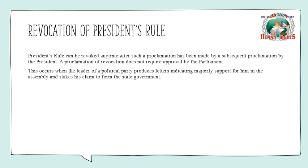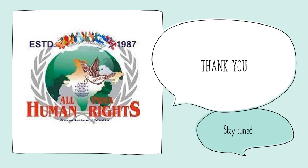Moving on to the final aspect of President's Rule — that is the revocation of President's Rule. The President's Rule can be revoked any time after such a proclamation has been made, and such a proclamation of revocation does not require approval by Parliament. This occurs when the leader of a political party produces letters indicating majority support in the assembly and is willing to form the state government. I hope it was clear, and if you have any doubts please ask. Thank you so much for watching.